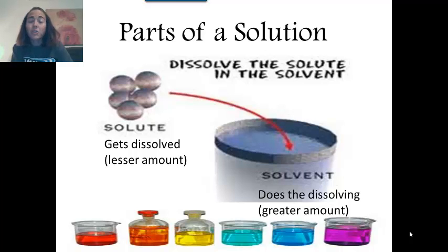There are two main parts of a solution, the solute and the solvent. The solute is the part of the solution that gets dissolved. A lot of times it's a solid, but it doesn't have to be. It's the material that you have the least amount of when you look at all of the parts of the solution.